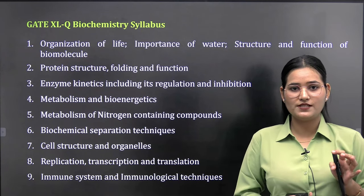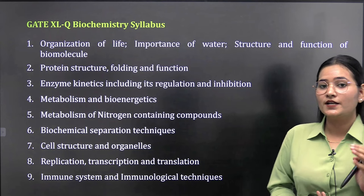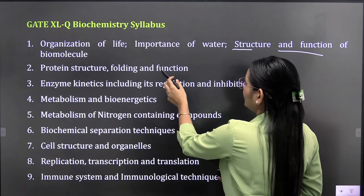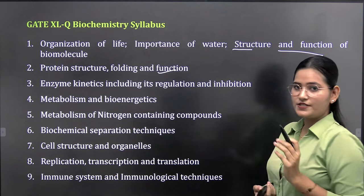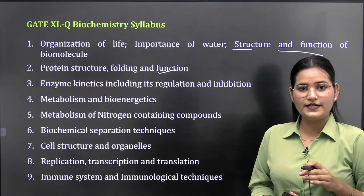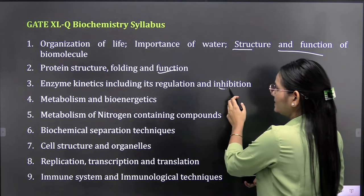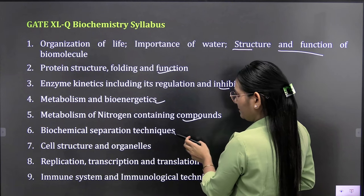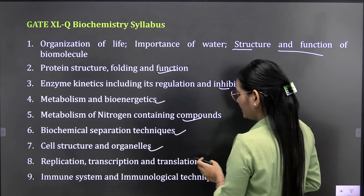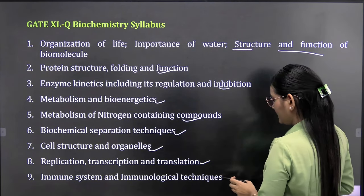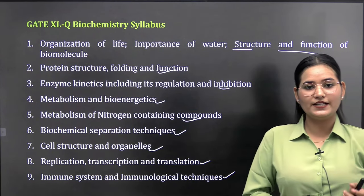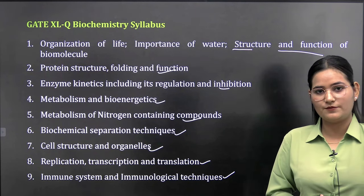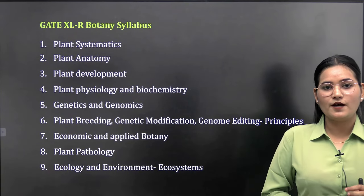For subjective syllabus, there are five subjects total. First is biochemistry. In biochemistry you will study structure and function of biomolecules, protein structure folding and function, enzyme kinetics and regulation, metabolism and bioenergetics, metabolism of nitrogen compounds, biochemical separation techniques, cell structure and organelles, replication transcription translation, immune system and immunological techniques. Basically nine sections you have to cover in biochemistry.